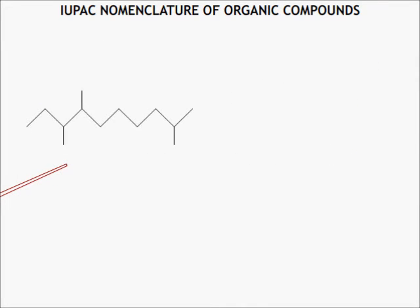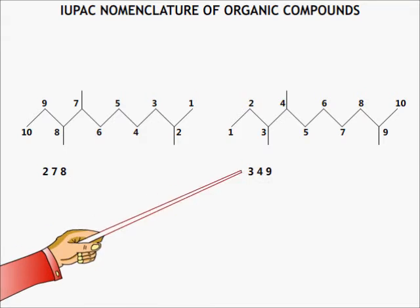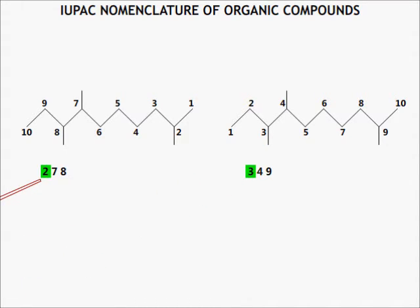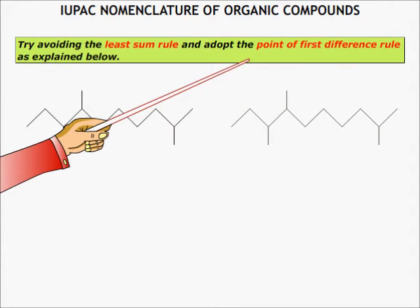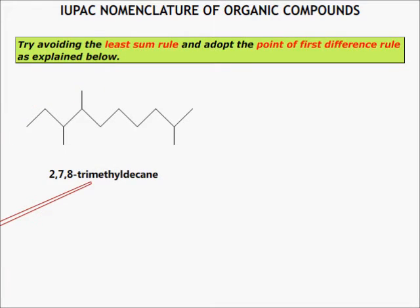In this compound, the longest chain has three substituents. While numbering, one arrangement gives substituents at positions 2, 7, 8 and another at 3, 4, 9. We compare the first number: 2 is less than 3, so the first arrangement is taken. If the first numbers are equal, we compare the second number and choose the lower one. This is called the first point of difference rule, which is accepted rather than the least sum rule. The name is 2,7,8-trimethyldecane.